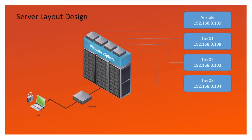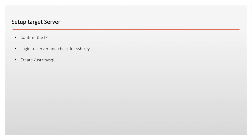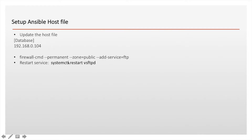This is the design which I have already shown in the previous video series. The first job is to create a target server. We'll confirm the IP, log in and check the SSH keys. Then we'll create our folder called MySQL under USR, update the host file with the database name, update the firewall if not done already, and start the FTP service if it's not started.